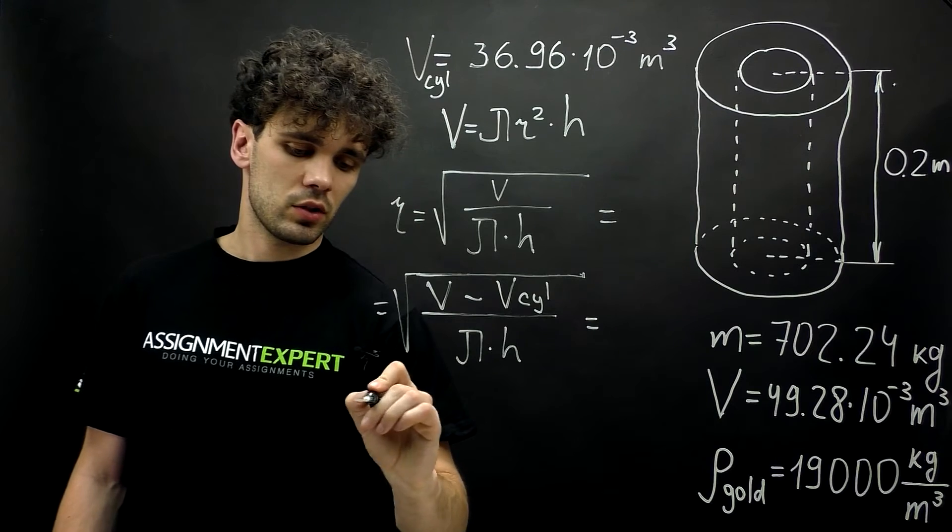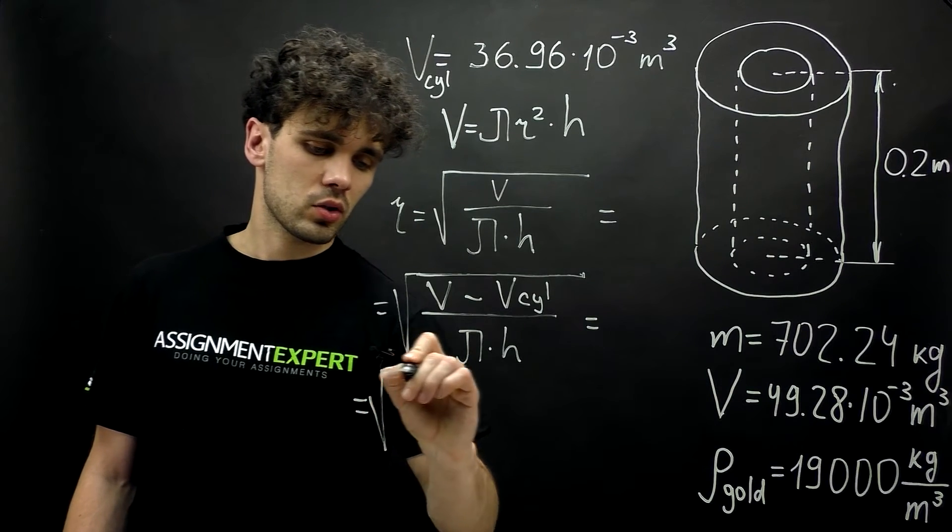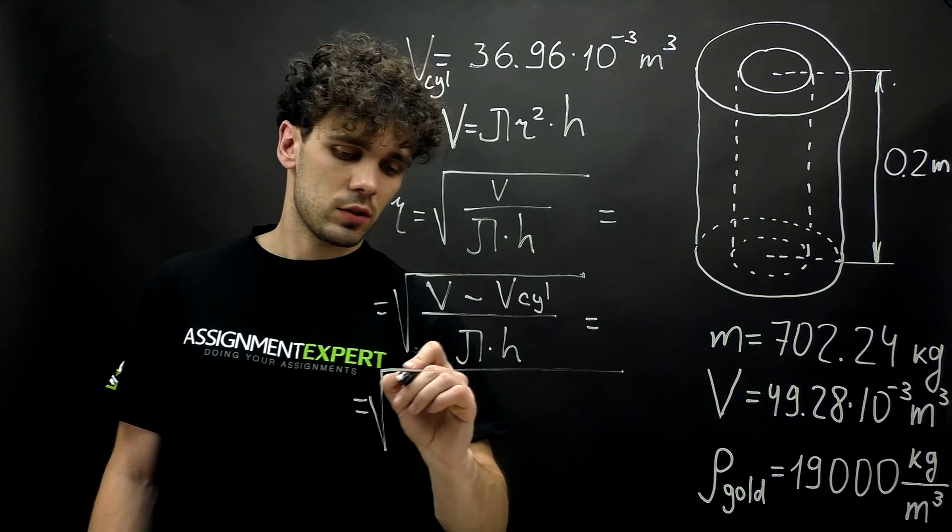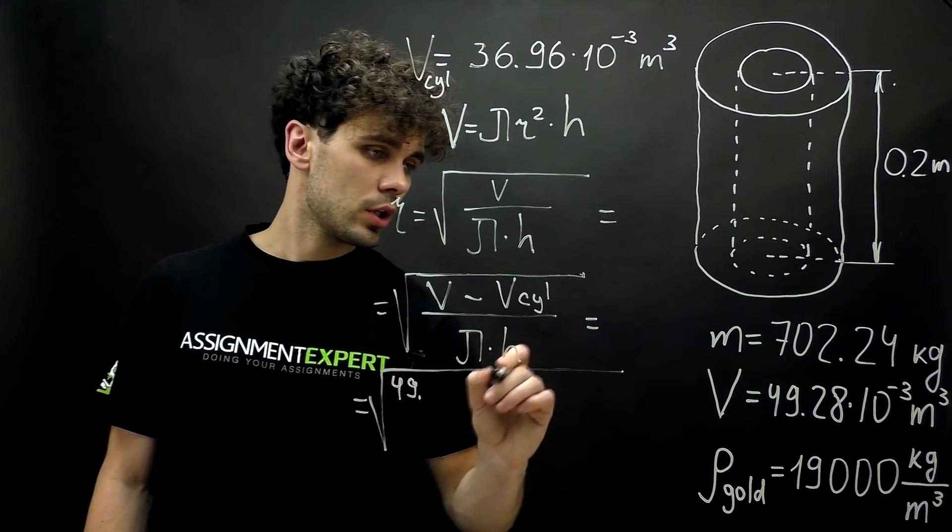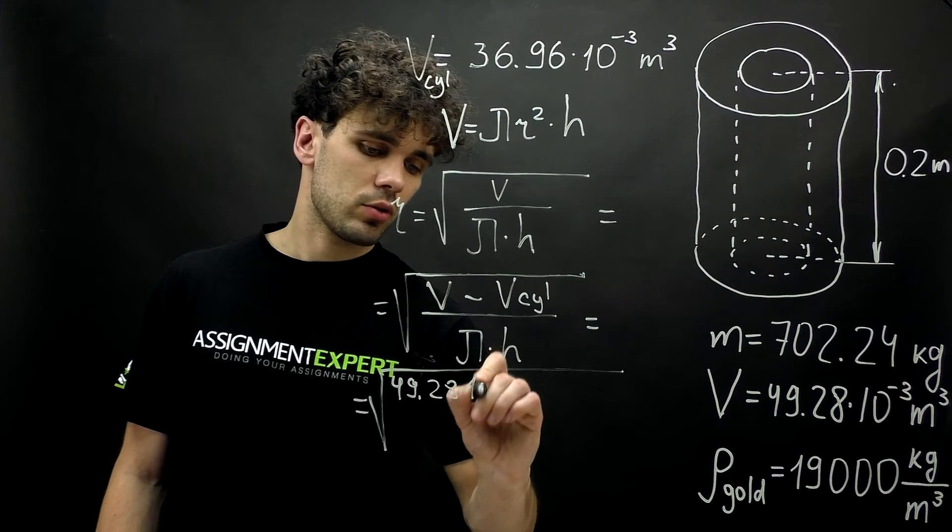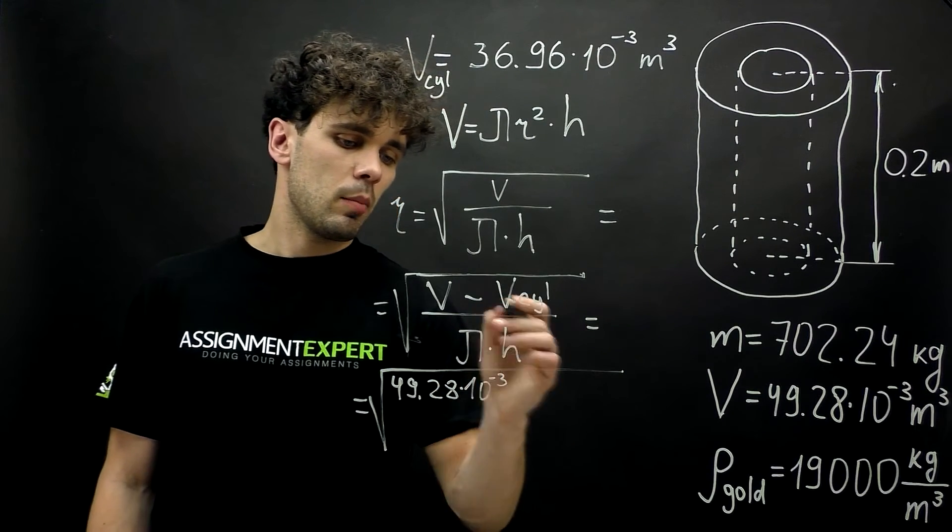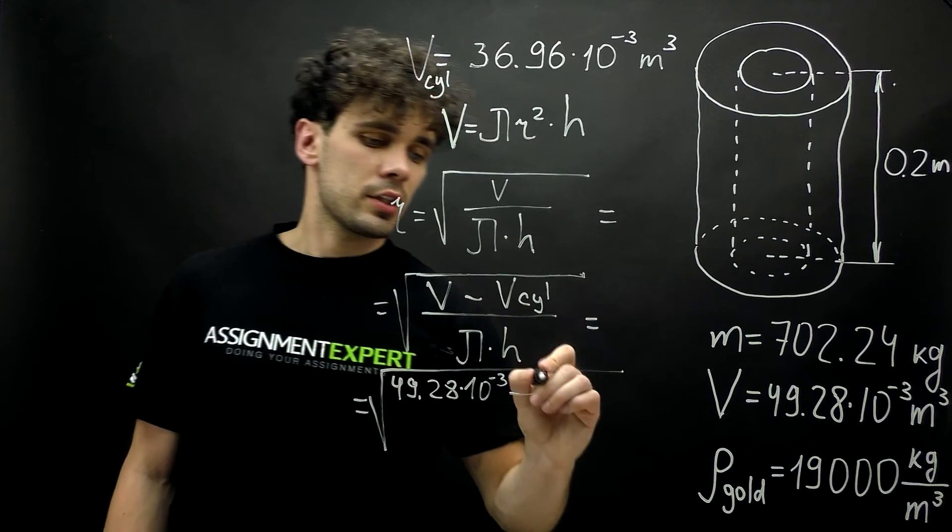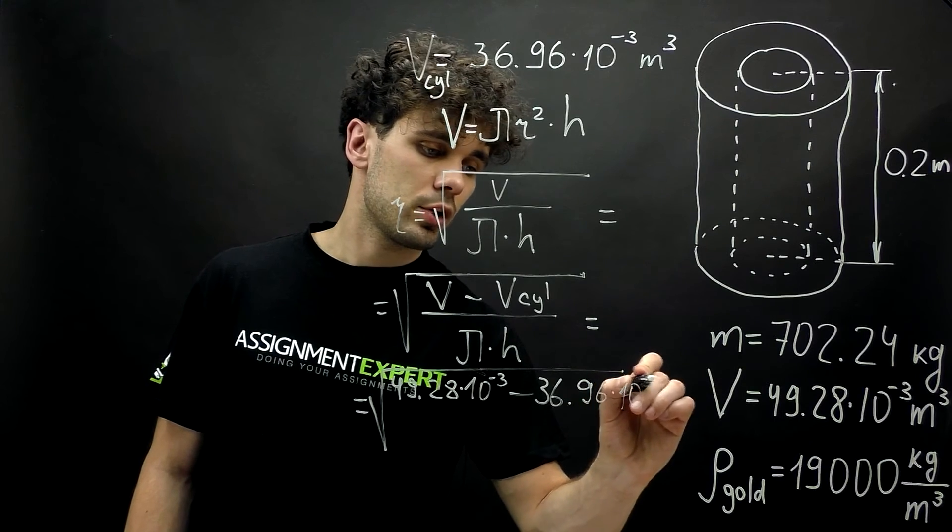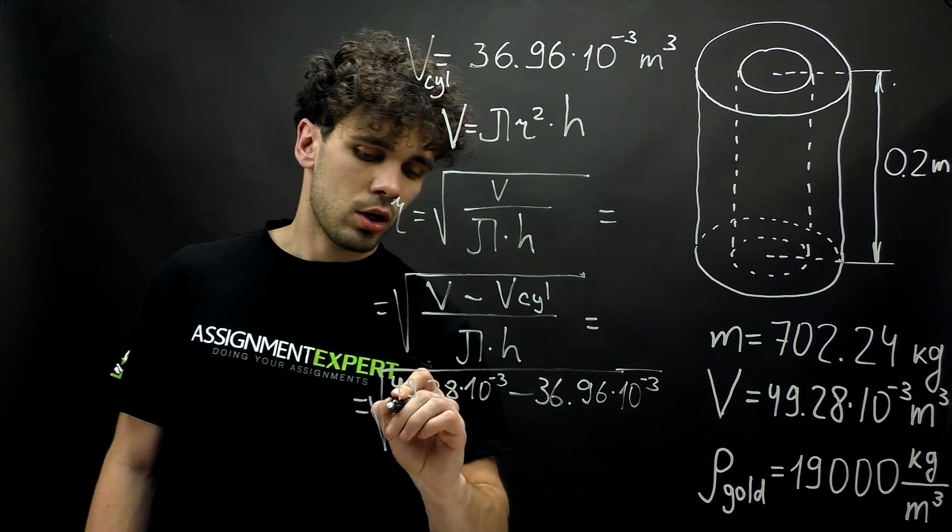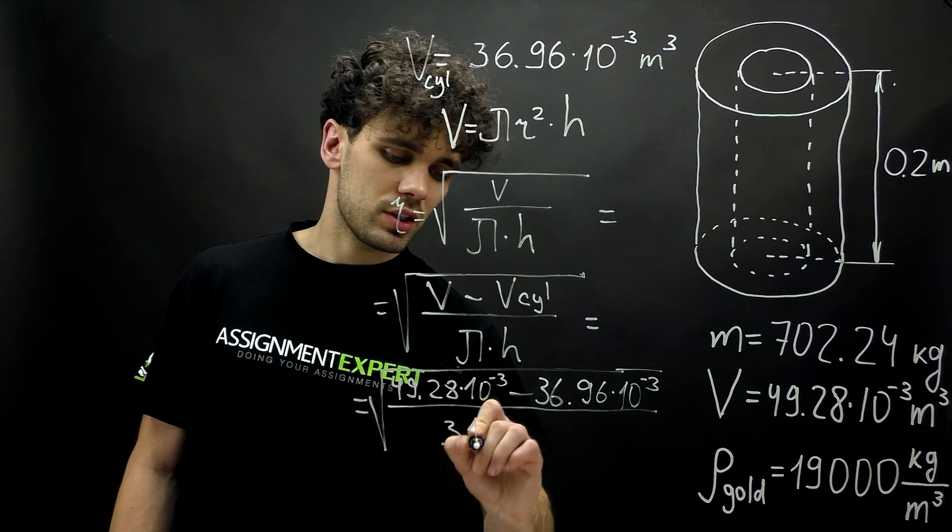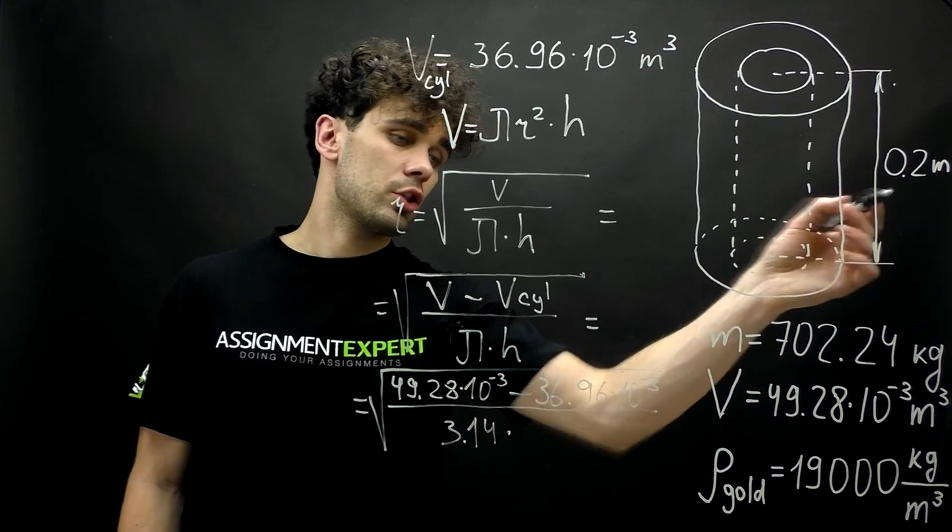And this gives us the square root of the total volume, which is 49.28 times 10 raised to the negative third minus 36.96 times 10 raised to the negative third over 3.16 times 0.2.